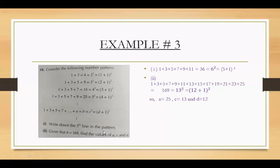The value of b is already given as 169. The value of c is 13. And d is the square number in that column — following the same pattern. I think I have cleared all the points. If you have any problem, you can ask. Thank you.